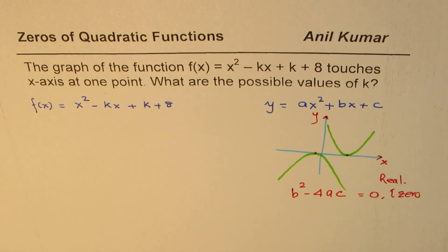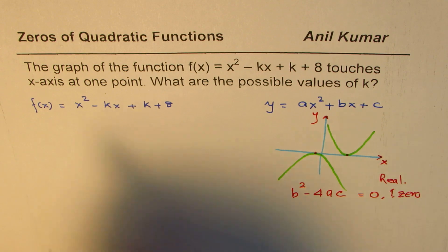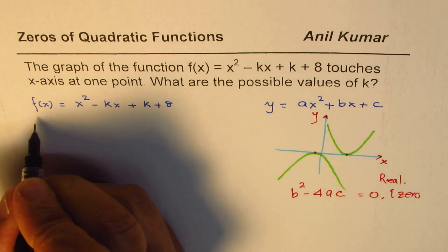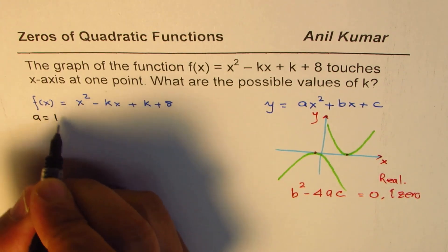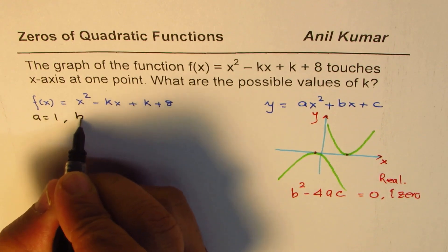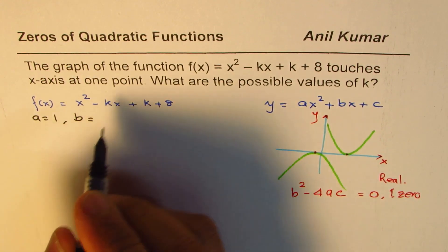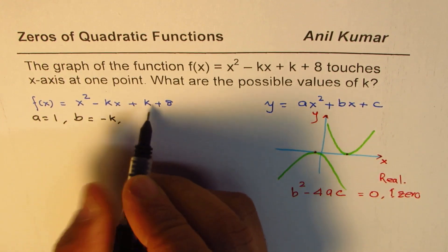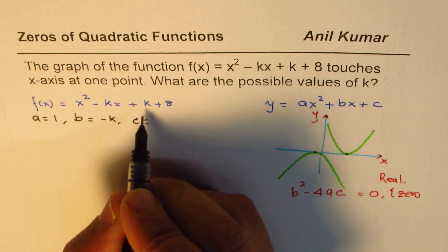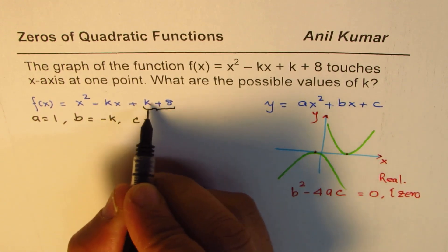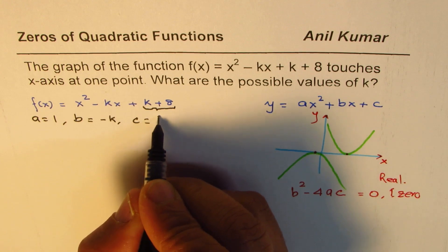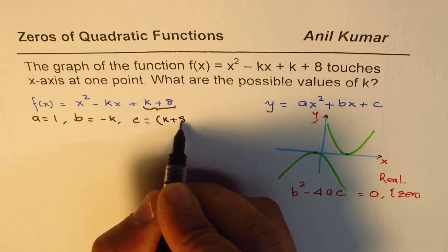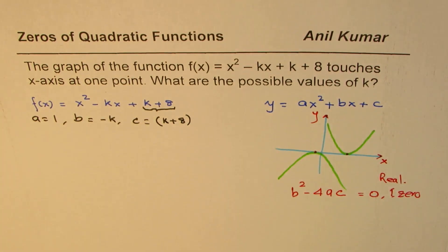So with this concept, let's move forward and solve the question. Now here in this equation, what is a for us? a is equals to 1, coefficient of x squared. b is coefficient of x, which is minus k, and c is what for us? c is a constant. So k is a constant, 8 is a constant, so we'll treat k plus 8 as c. This makes this question kind of typical.